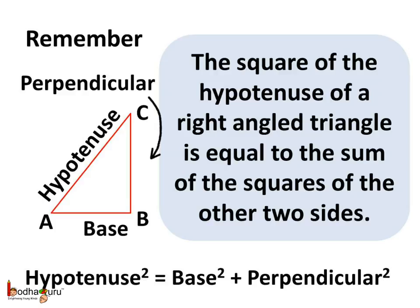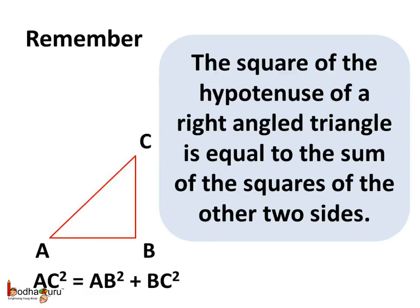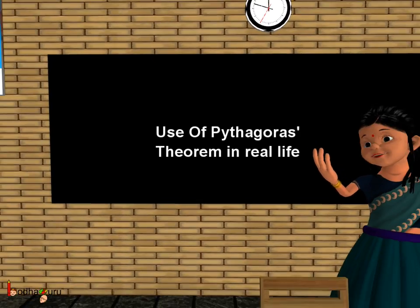So remember children, the Pythagoras theorem explains the relation between the sides of a right-angled triangle, and it says the square of the hypotenuse equals the sum of the squares of the other two sides. Hence, hypotenuse² = base² + perpendicular². In right-angled triangle ABC, AC² = AB² + BC². If you know the length of any two sides, you can find the third side. That's all for now — bye-bye children.